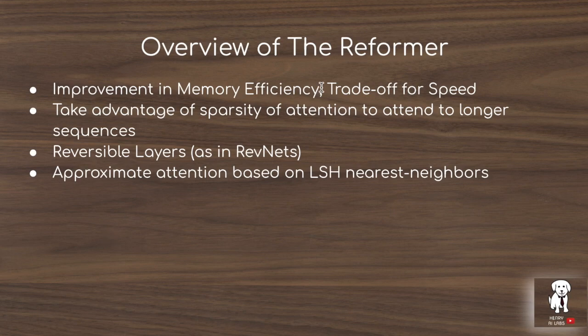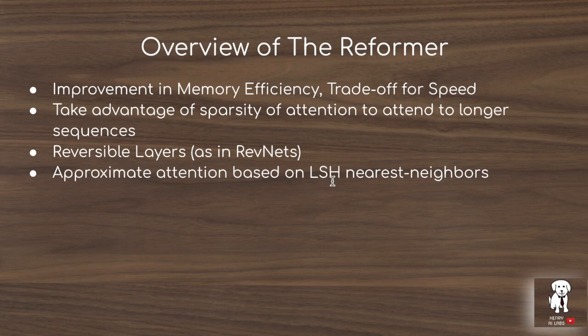The idea is to take advantage of the sparsity of attention using approximate attention based on LSH for nearest neighbors. This locality-sensitive hashing technique approximates the query times key matrix by only multiplying by keys similar to the query, since only similar keys come out with a large dot product value anyway. This dramatically reduces computation and makes it possible to attend over longer sequences without looking at all the keys.